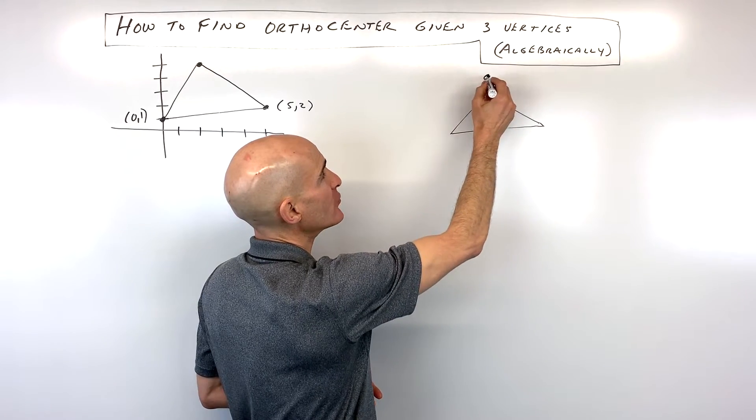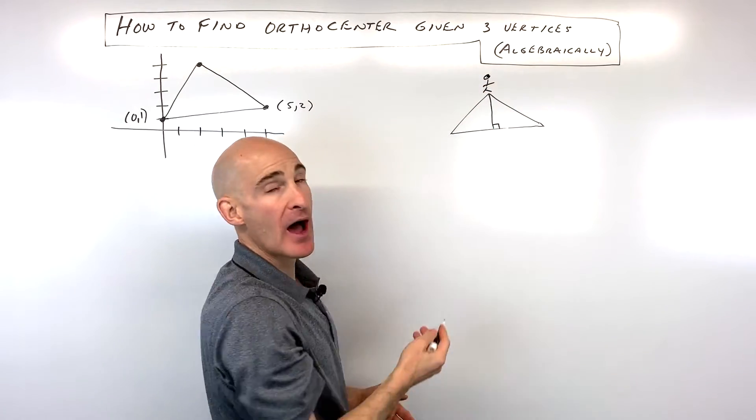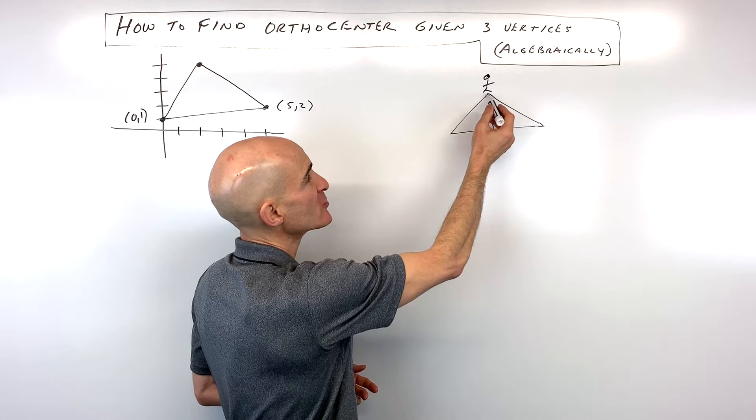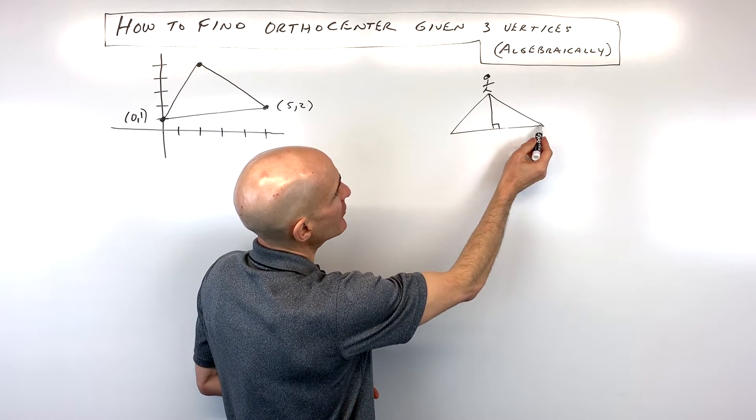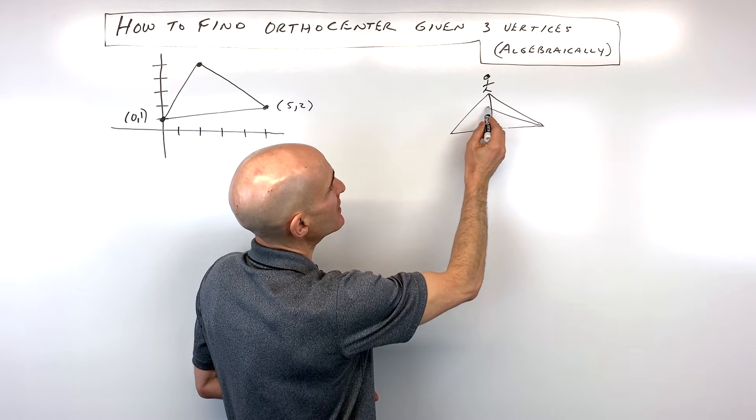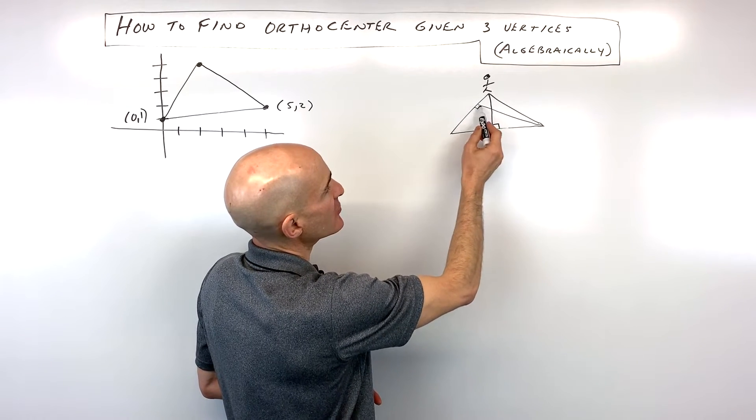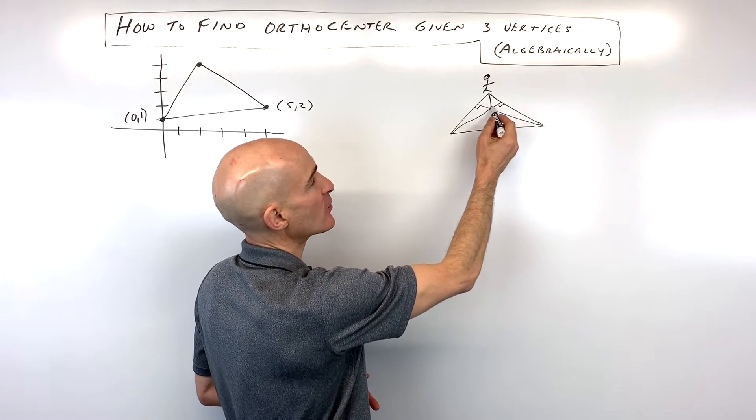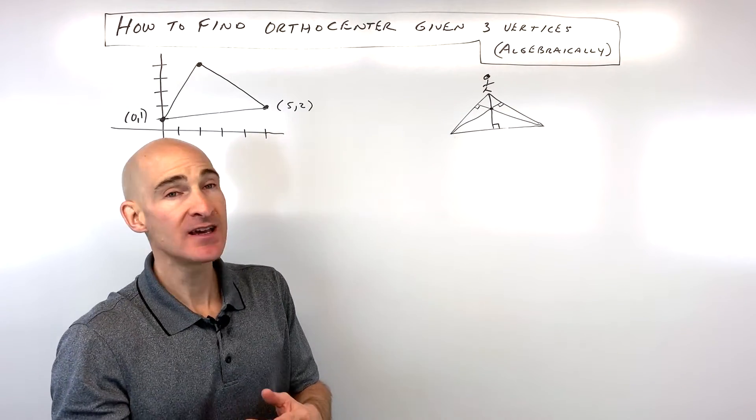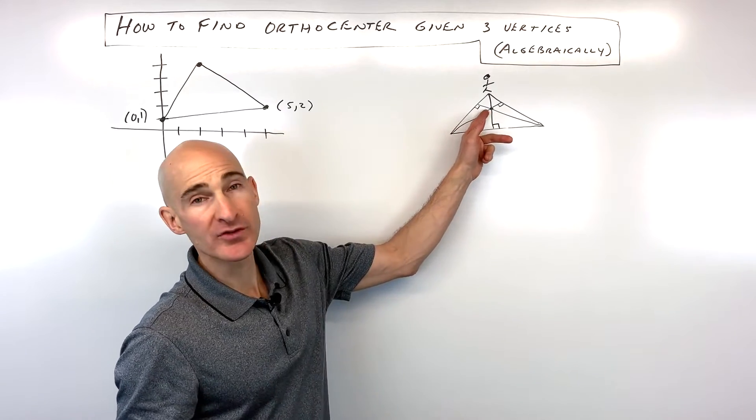A triangle is like a mountain. If you climb the mountain and someone asks how high above the ground you are, you always measure the perpendicular distance down. For example, if I wanted to find the altitude from this vertex, I would make a perpendicular to the other side. Same thing over here - where those three altitudes cross, that's the orthocenter.